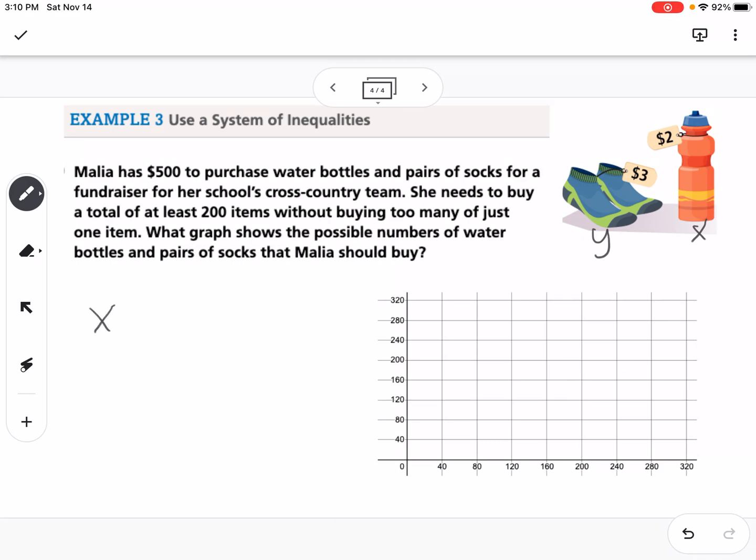First of all, the items. Let's call X the water bottle and Y the socks. We know that x plus y needs to be greater than or equal to 200. That's our total items. However many water bottles we buy plus however many socks together, those need to be greater than 200.